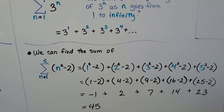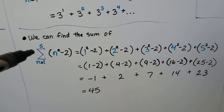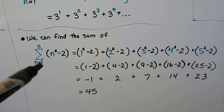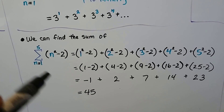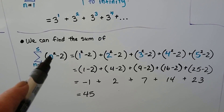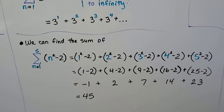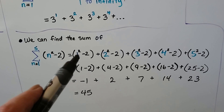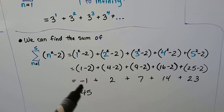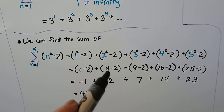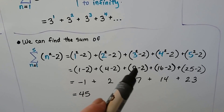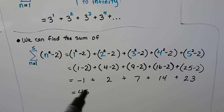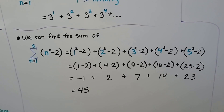We can find the sum of this. Here we've got 5 terms, starting with n equals 1. We substitute 1, 2, 3, 4, 5 for n. We get 1 times 1 minus 2, which is negative 1; then 4 minus 2; 9 minus 2; 16 minus 2; 25 minus 2. Adding those up, we get 45.